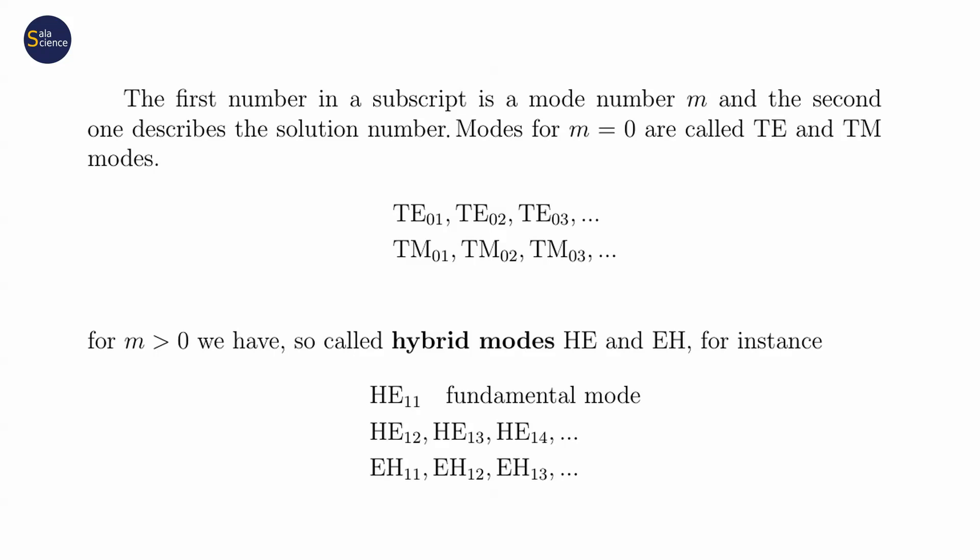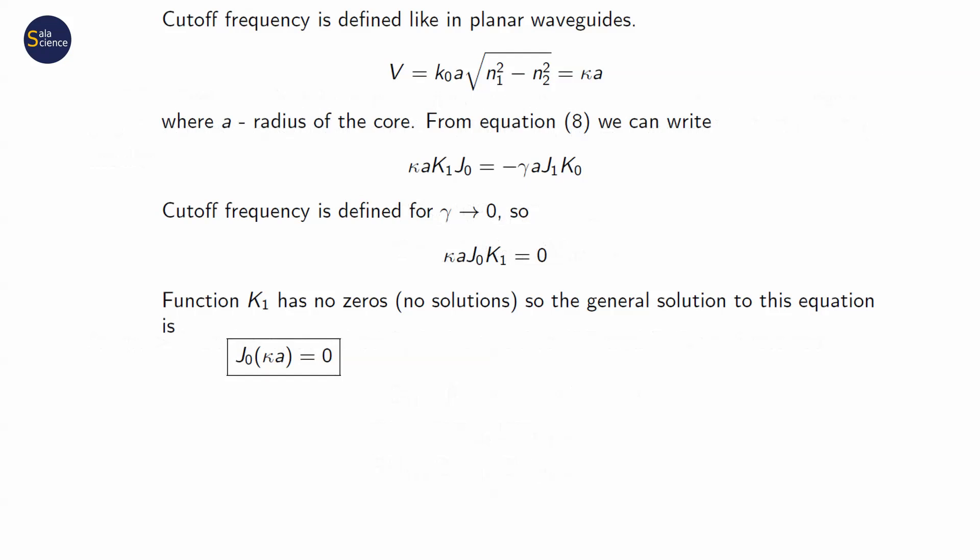In planar waveguides, we introduced quantities called the normalized frequency and the cutoff frequency. In optical fibers, they are derived in a very similar way. The only difference is that in planar waveguides we used the thickness of the core, and here we have a radius of the core, a. Moreover, cutoff frequency is defined for gamma approaching zero.